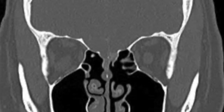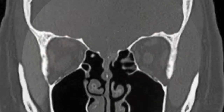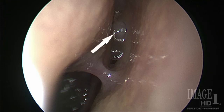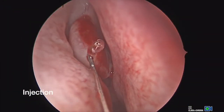Shown here is her preoperative CT scan, which shows the area likely of leak at the right cribriform plate. The endoscopic examination also shows this bleb of clear fluid and the likely site of leak, with potentially two sites that will require repair.